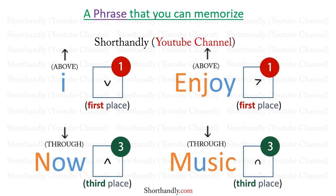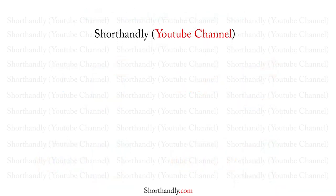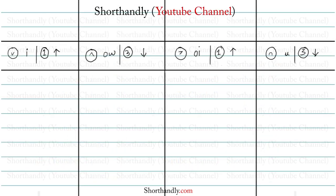Now we are going to take some examples for all 4 diphthongs. Let's start with the diphthong 'i'. Suppose you have a word called 'pi' — we have the sound of 'i' just after the P consonant. This word 'pi' is written with the outline above the line and the diphthong placed on the first place.